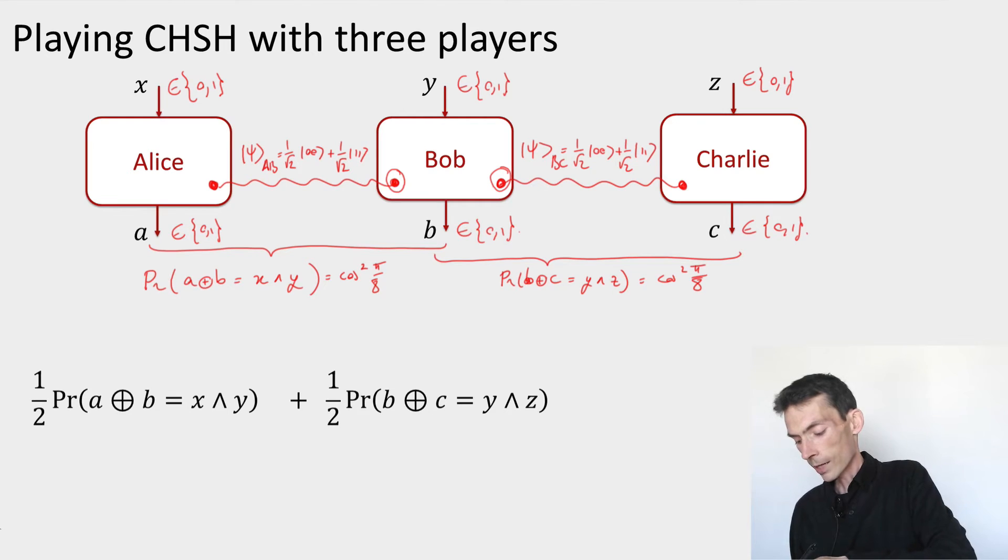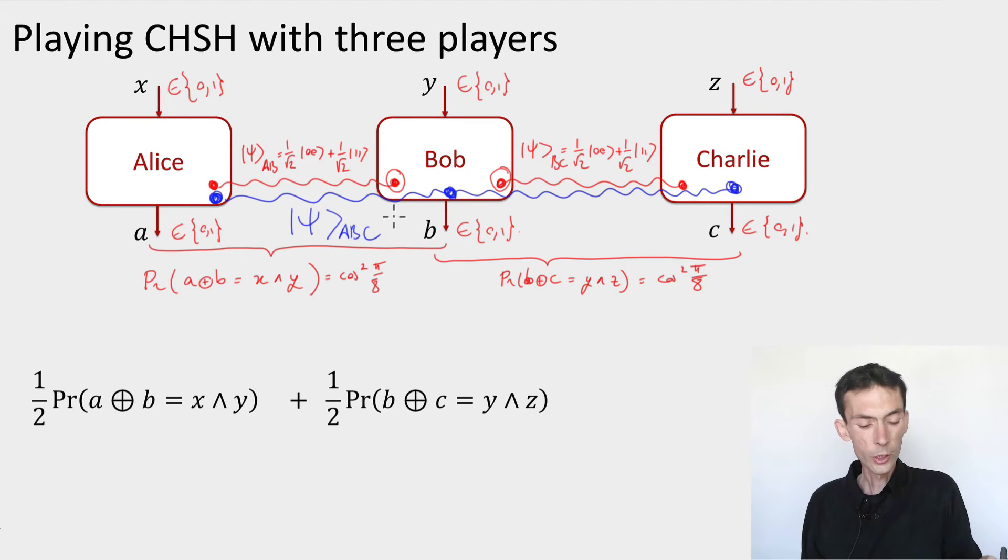So the question that I'm asking is, does there exist now a tripartite entangled state, psi_abc, and measurements, local measurements, on this state that produce outputs a, b, and c for Alice, Bob, and Charlie,